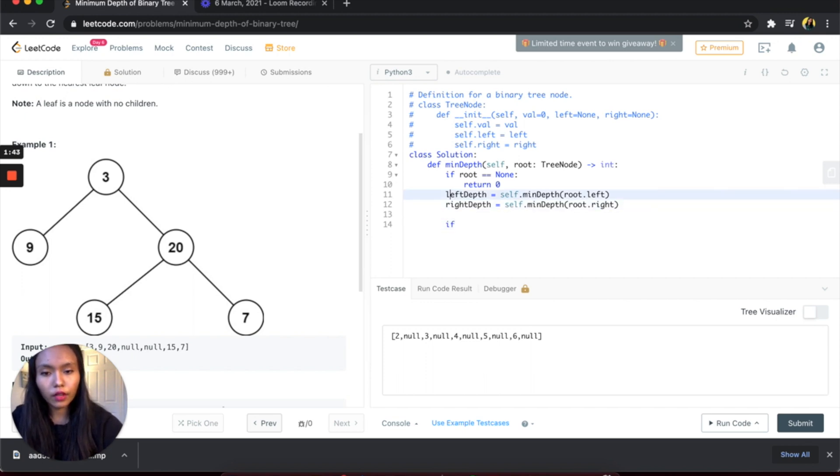That's why we have this condition here where we say if left depth is equal to zero or right depth is equal to zero, then what we want to do is return the max of the left depth and right depth, and we're going to add one to it. We're adding one to count the node that we're on.